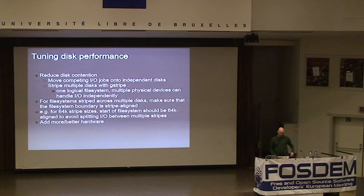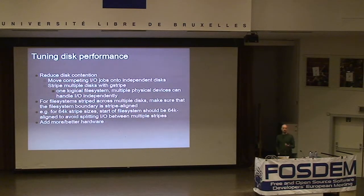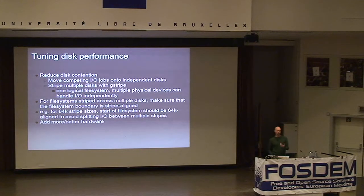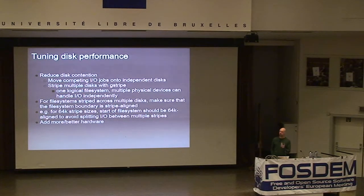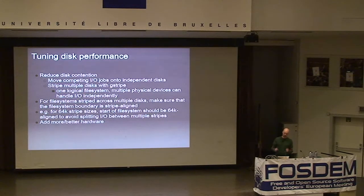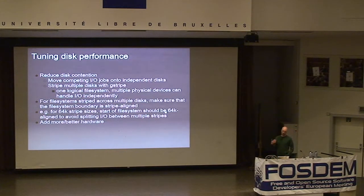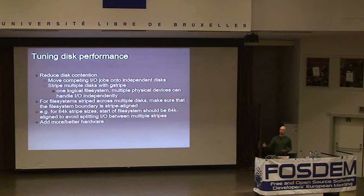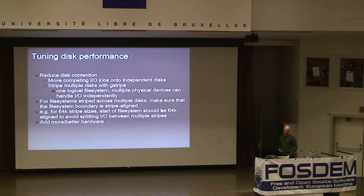Suppose we've identified a disk problem or see higher disk latency — what can we do to fix it? Disk is typically a shared resource accessed by many processes, and if sharing is causing the problem the obvious answer is to make it not shared. You can reduce disk contention by moving I/O jobs: if two processes are doing I/O to the same disk, move them onto independent disks, or if you can't, restructure the application to use separate files and paths.